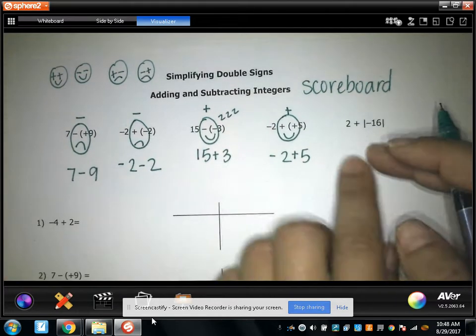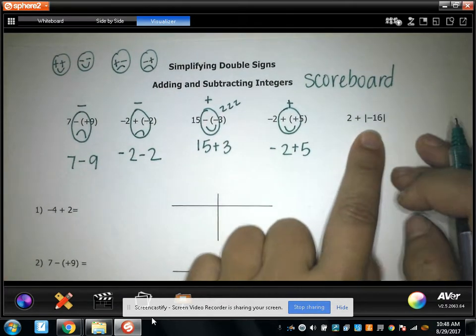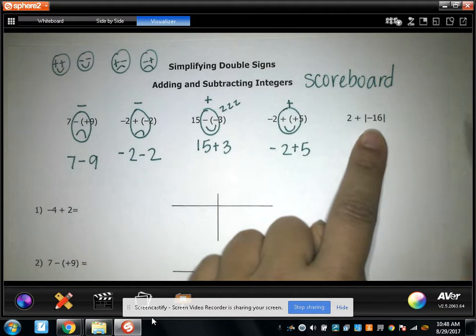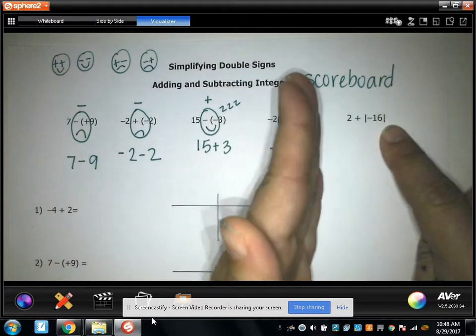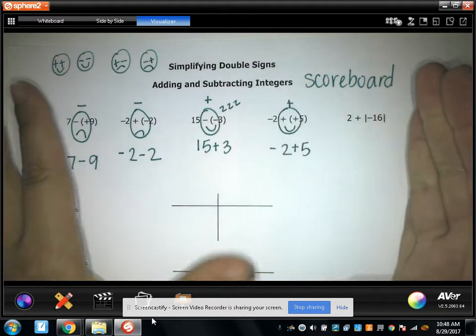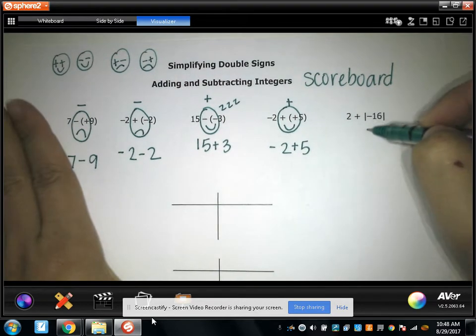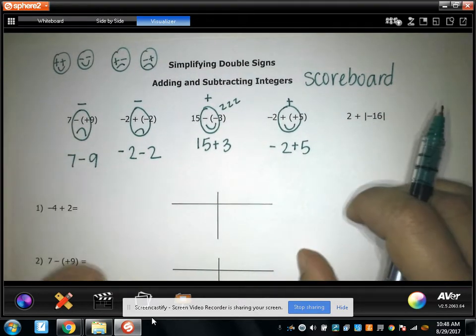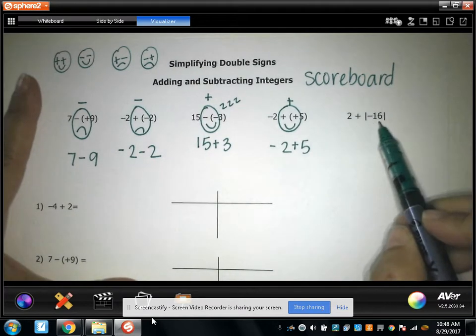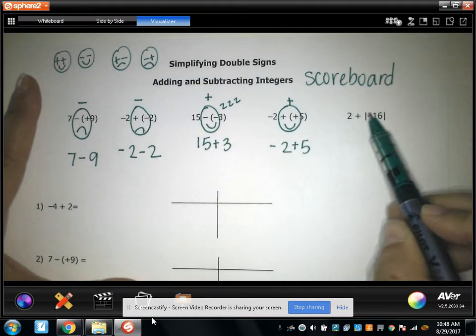Now there's an exception to this and it's when there's an absolute value sign. When there are absolute value brackets, it's kind of like a wall that you cannot get through. I cannot physically circle these two signs and make them into one sign. Because the absolute value brackets cannot be broken into. It's like a wall.